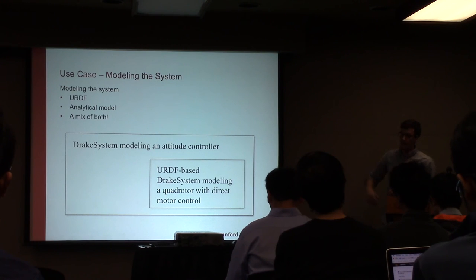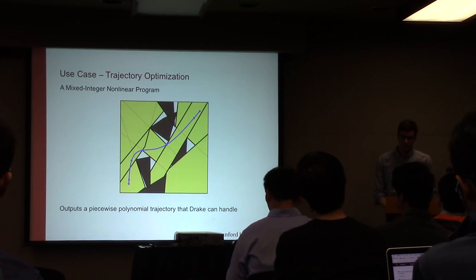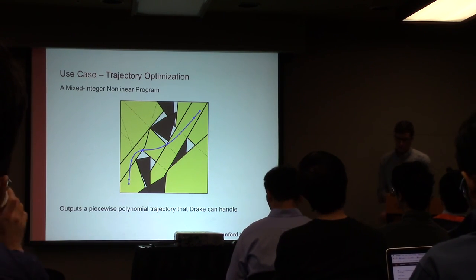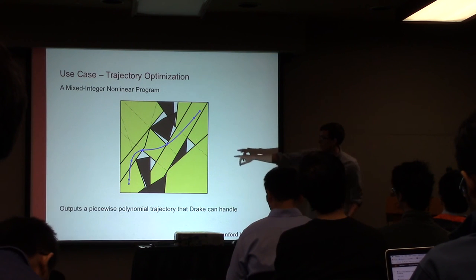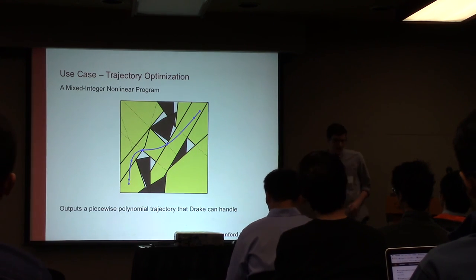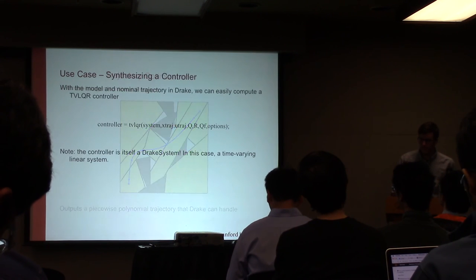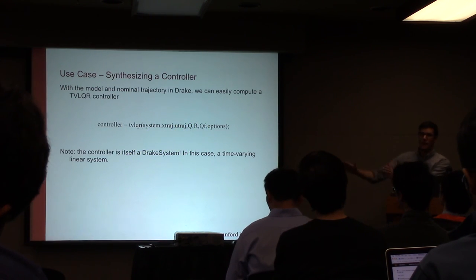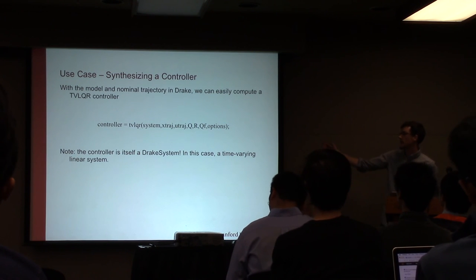You have these two options: you can use a URDF which is an XML file that describes your robot, or you can also write it by hand. But turns out you can also actually combine those two. So that's what ended up happening because what we had was a system that was easy to model using URDF. Basically these are four motors, this is a rigid body, and those motors produce thrust. Very simple model, that's all URDF, just an XML file.